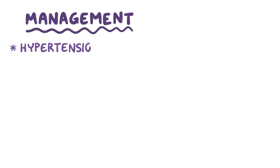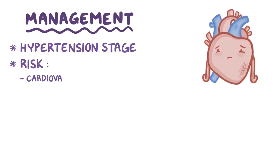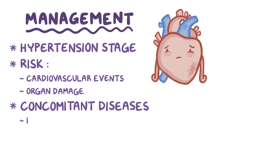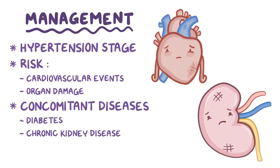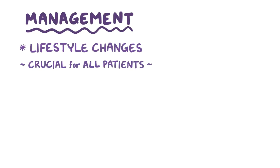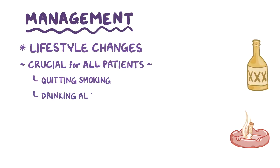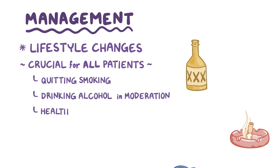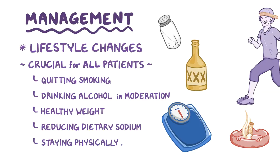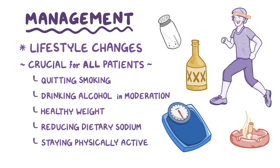Management for hypertension is mainly based on the hypertension stage, risk of developing cardiovascular events and organ damage, as well as taking into account any concomitant diseases such as diabetes or chronic kidney disease. Lifestyle changes are crucial for all patients, especially in the long term, and include things like quitting smoking, drinking alcohol in moderation, maintaining a healthy weight, reducing dietary sodium, and staying physically active.